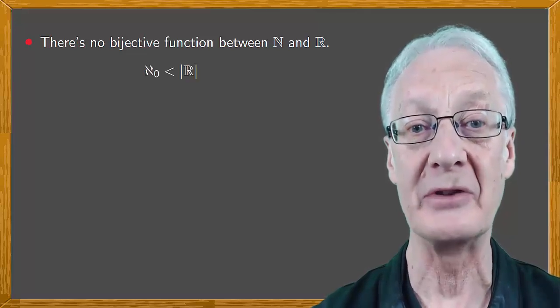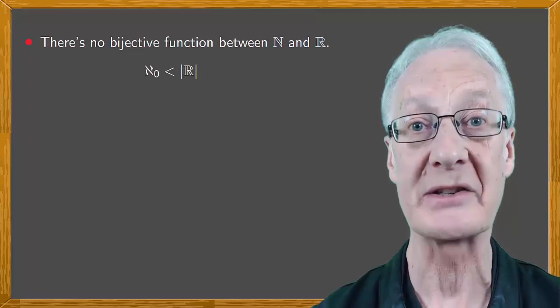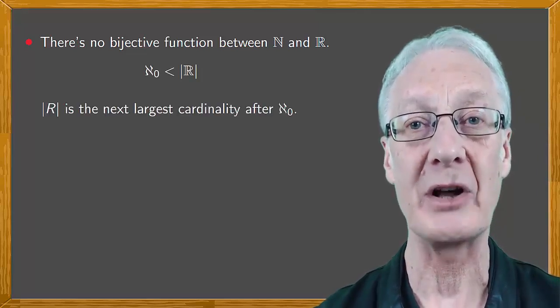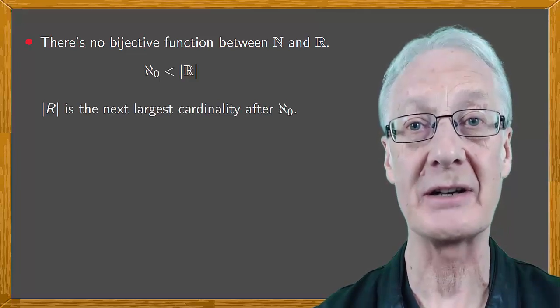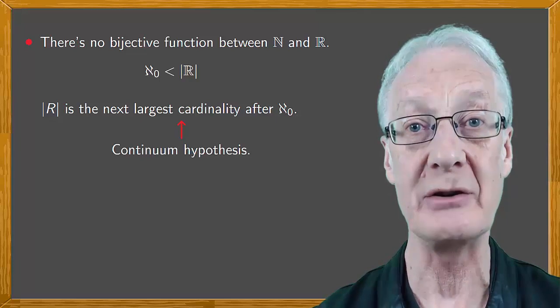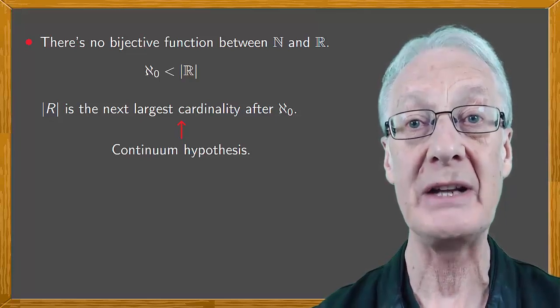Therefore that aleph null is less than the cardinality of the set R. Cantor believed that cardinality R was the next largest cardinality after aleph null, a property known as the continuum hypothesis. But he failed to prove it.